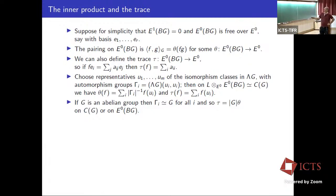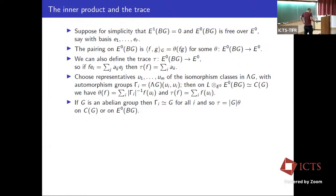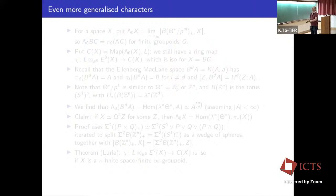In the abelian case, all centralizers are equal to the whole group, so the γ_i's are all equal to G. In that case we find that the trace form τ is just the perfect form theta multiplied by the order of G. We'll need that later.